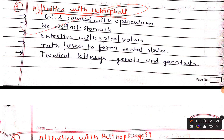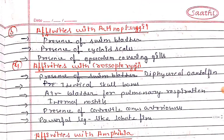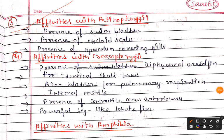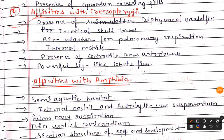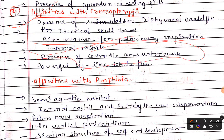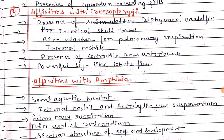Affinities with Holocephali include: gills covered with operculum, distinct stomach absent, intestine with a spiral wall, teeth fused to form a dental plate, and identical kidneys, gonads, and gonoducts. Affinities with Actinopterygii: presence of swim bladder, cycloid scales, and operculum covering gills. Affinities with Crossopterygii: diphycercal caudal fin, identical skull bones, air bladder, pulmonary respiration, internal nostril, presence of contractile conus arteriosus, and powerful leg-like lobate fins.